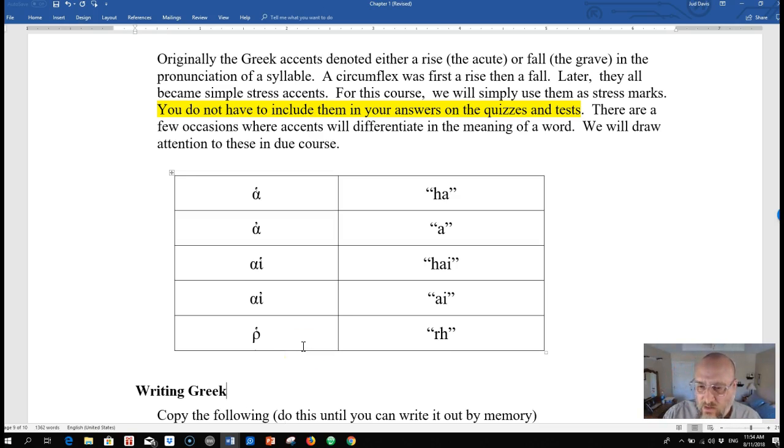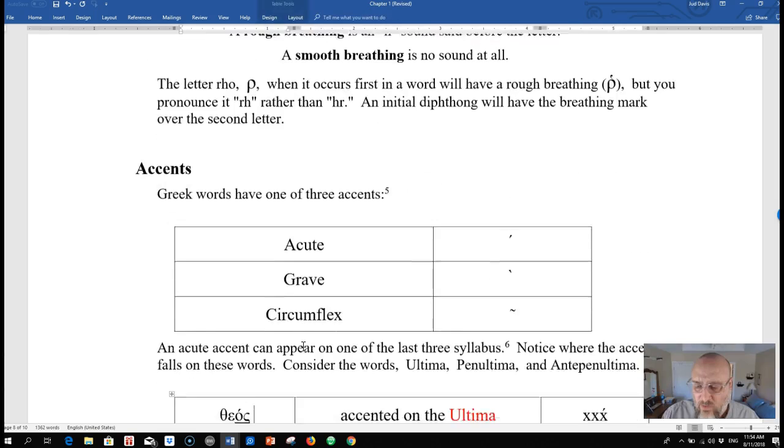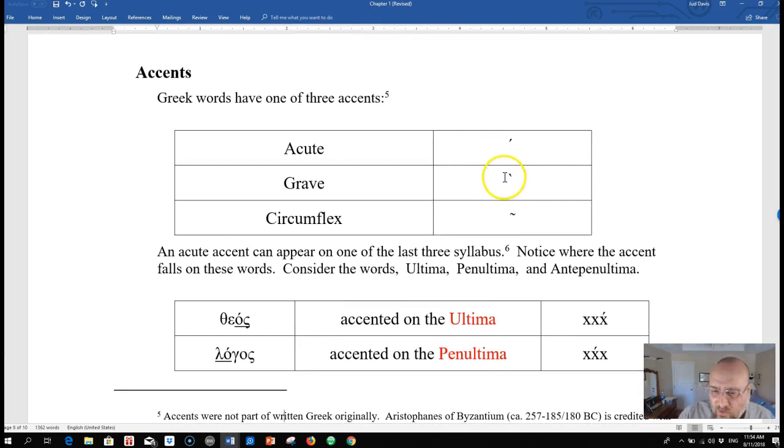So these are the breathing marks: rough, smooth. And then you have accents - an acute accent, a grave accent, and a circumflex. Now originally these were some kind of pitch things. So acute was a rising accent, a grave was a falling accent, and a circumflex was a rising and then a falling. Today they're all three pronounced exactly the same as stress accents. We are most important learning the grammar, so if you can recognize accents that's great. Don't worry about getting them perfect at this stage.